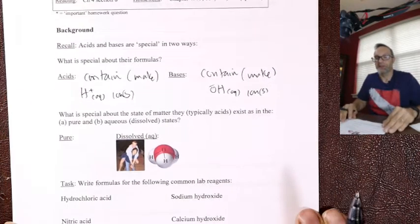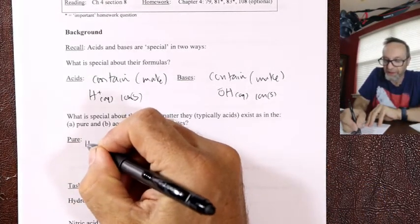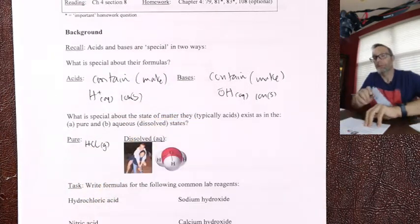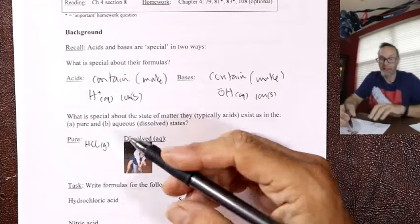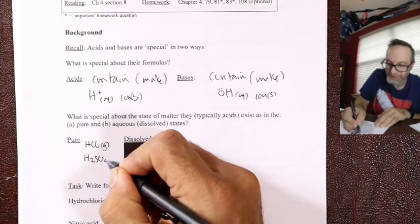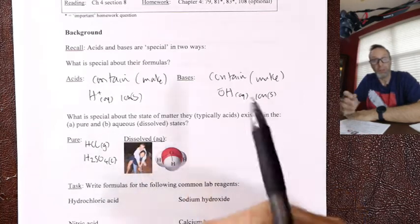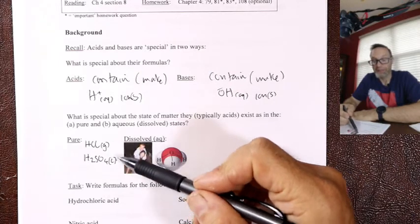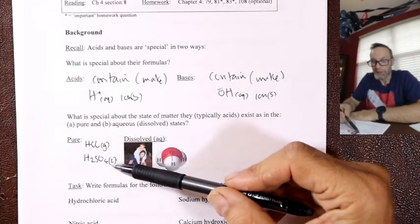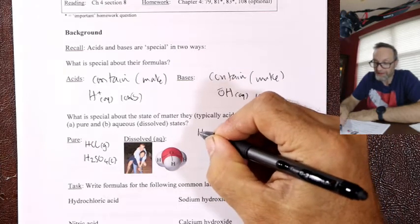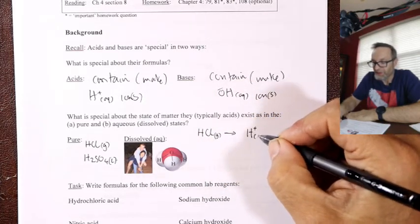To complicate the story a little more: in the pure state, acids are molecular. If you got some pure HCl, it would be a gas — a molecular gas. Sulfuric acid is a liquid in the pure state. Gases and liquids are not giant ionic compounds — they're molecular. Something that's a gas or liquid at room temperature is probably molecular. But when they dissolve, that's essentially how we make stomach acid.